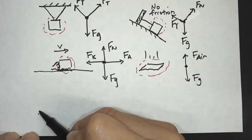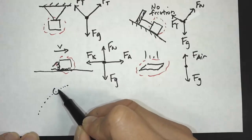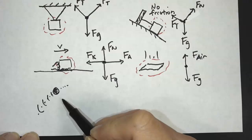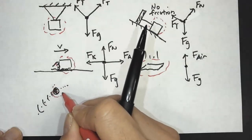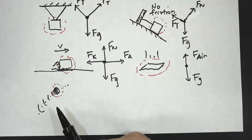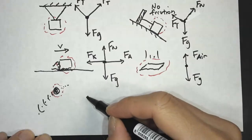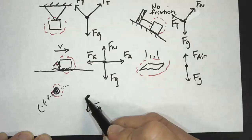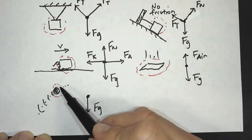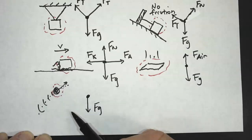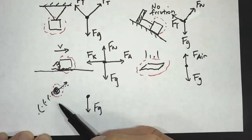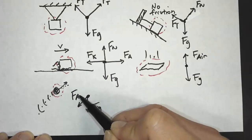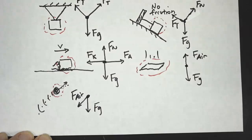Let's take a look at another example of air drag — a ball being tossed into the air. At this point in its flight, what are the forces acting on it? Of course, there's gravitational force, and the air drag is going to be in the opposite direction that it's moving. Since it's moving in this direction, the air drag will be in the opposite direction.